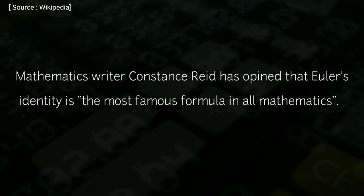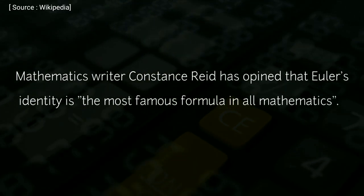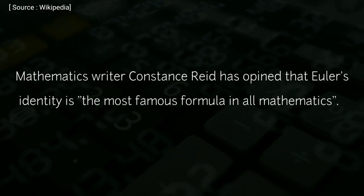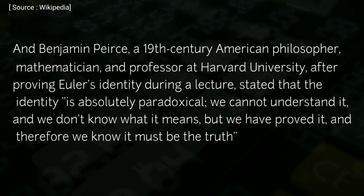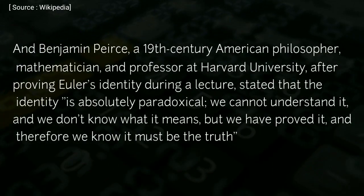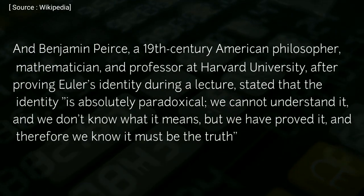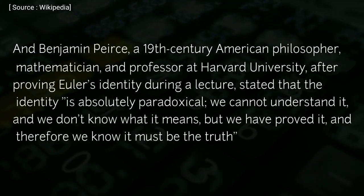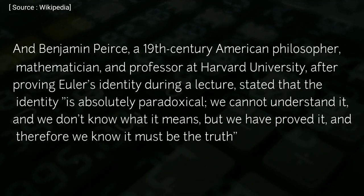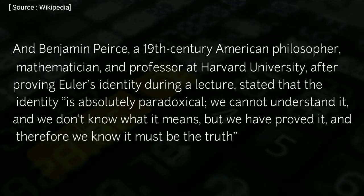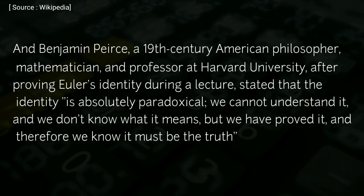Mathematics writer Constance Reid has opined that Euler's identity is the most famous formula in all mathematics. And Benjamin Peirce, a 19th century American philosopher, mathematician, and professor at Harvard University, after proving Euler's identity during a lecture, stated that the identity is absolutely paradoxical. We cannot understand it, and we don't know what it means, but we have proved it, and therefore we know it must be the truth.